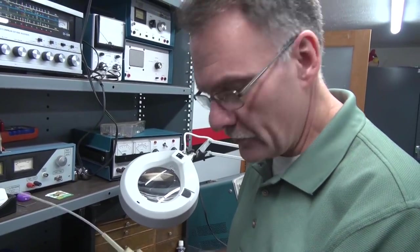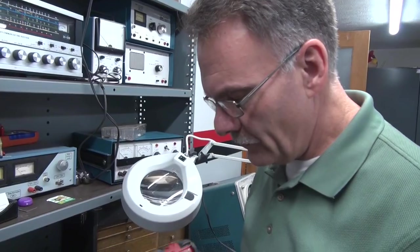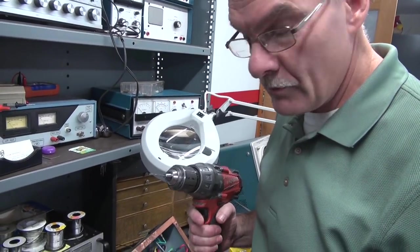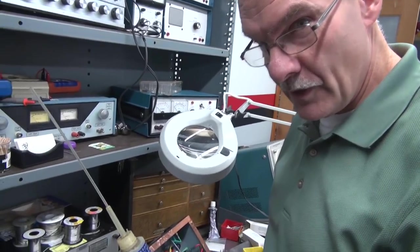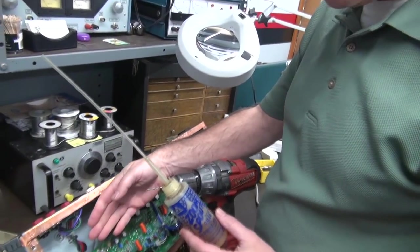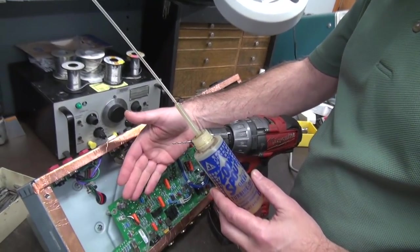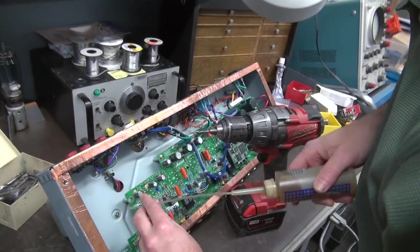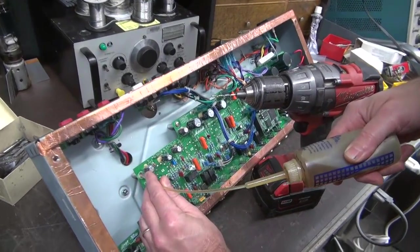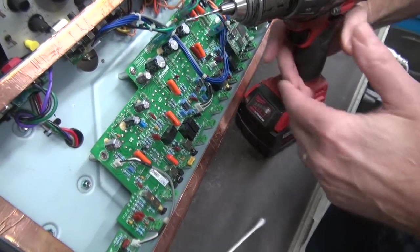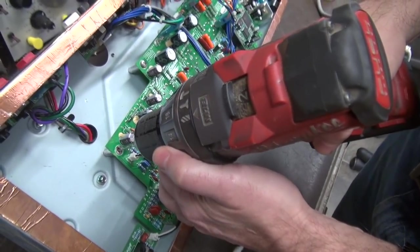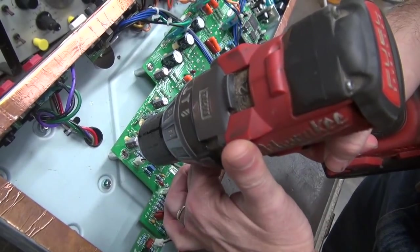All right, start the process. Number one, you need a good sharp drill. This is about a 3/32 drill. I'm going to use a little bit of cutting oil. Yeah, it's going to make a little bit of a mess. I might get some contaminants on the board, but I'll clean it up. No big deal. So I'm going to put a little drop of oil on there.